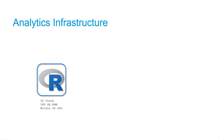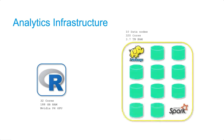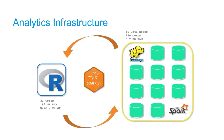Briefly, we'll go over the analytics infrastructure we have at Independence. We have an R box that has 32 cores, 188 gigabytes of RAM, and an NVIDIA P4 GPU. We also have a Spark cluster that has 10 data nodes, 320 cores, and 3.7 terabytes of RAM. We use Sparklyr to interface R with the Spark cluster.